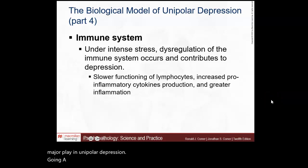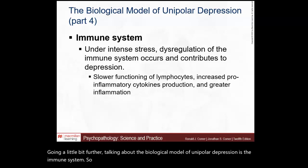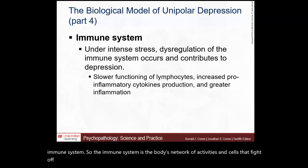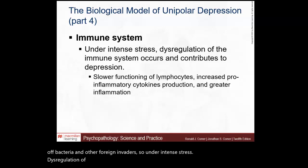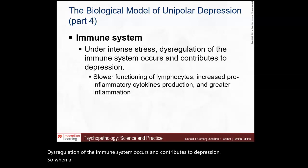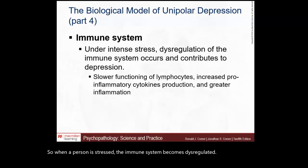Another component of the biological model is the immune system — the body's network of activities and cells that fight off bacteria and other foreign invaders. Under intense stress, dysregulation of the immune system occurs and contributes to depression. When a person is stressed, the immune system becomes dysregulated, which results in depression.